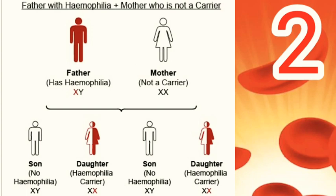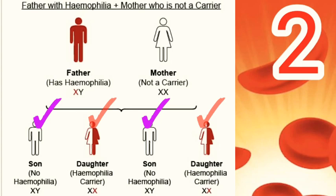Case 2: father has hemophilia and mother is not a carrier. If the baby gets the Y chromosome from the father it will be a boy. Since the Y chromosome doesn't carry the hemophilia gene, a son born to a man with hemophilia and a non-carrier woman will not have hemophilia. If the baby gets the X chromosome from the father it will be a girl. The normal blood clotting gene on the mother's X chromosome is dominant, so the baby girl will not have hemophilia but will be a carrier. In this case, all sons will be normal and all daughters will be hemophilia carriers.